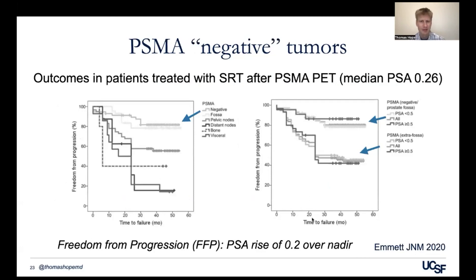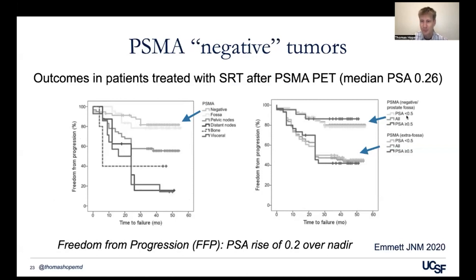This is also seen in patients who receive salvage radiation therapy. If you have biochemical recurrence after definitive therapy and your PSA rises, and you get a PSMA PET showing negative findings or local disease only, you do much better than patients with distant metastases. Having a negative PSMA PET is actually a good thing — those findings were independent of PSA at time of imaging, so PSMA PET itself is much more prognostic than PSA.